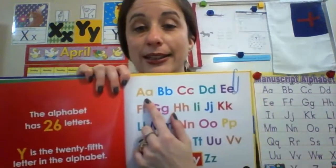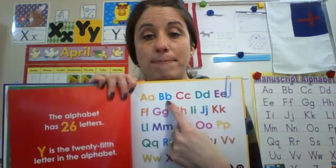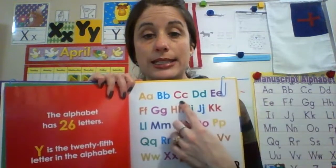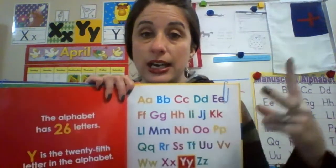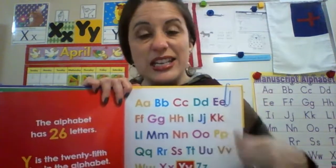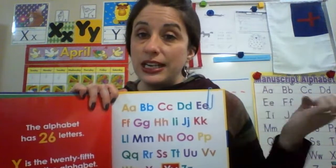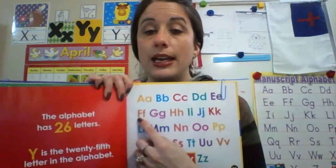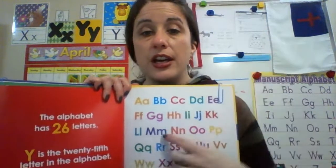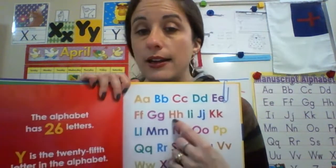A — the letter A, ah ah ah. B — the letter B, buh buh buh. C — the letter C, kuh kuh kuh. D — the letter D, duh duh duh. E — the letter E, eh eh. F — the letter F, fff fff. G — the letter G, guh guh guh.